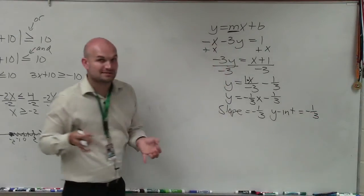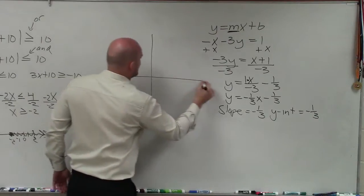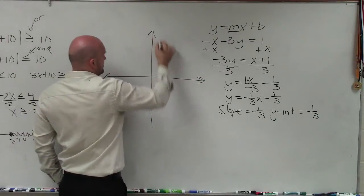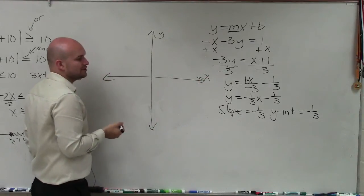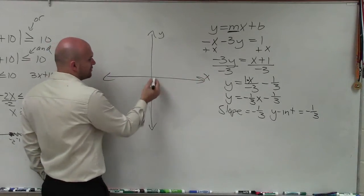Now remember, the y-intercept represents a point. So when I go to graph, I'm going to have my y-axis and my x-axis. The first thing I'm going to do is plot my point at negative 1 third.